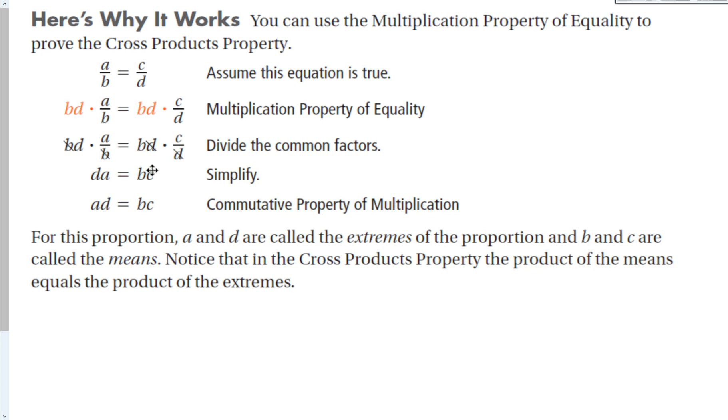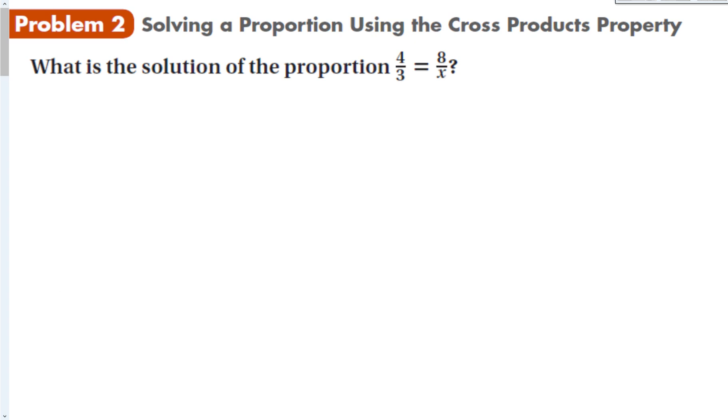I can rewrite with the commutative property any way I want. I chose to flip these two around to give me A times D is equal to B times C, which happens to be my cross products right there. For this particular proportion, A and D are called the extremes of the proportion, and B and C are called the means. Notice that in the cross product property, the product of the means equals the product of the extremes.